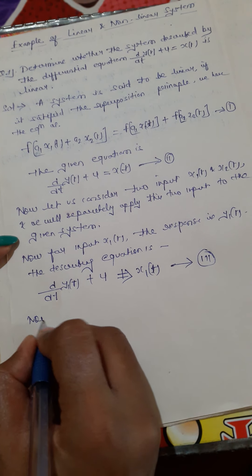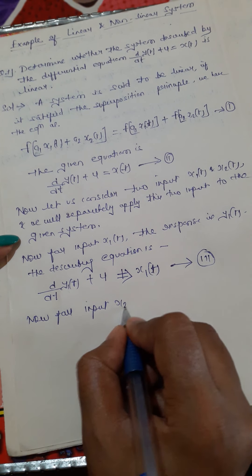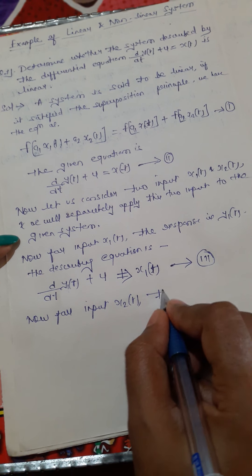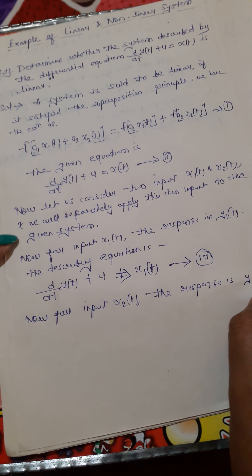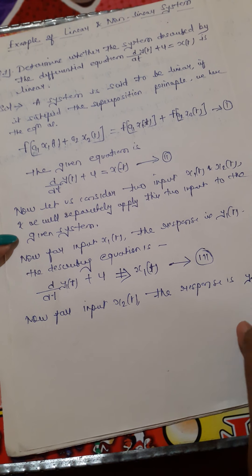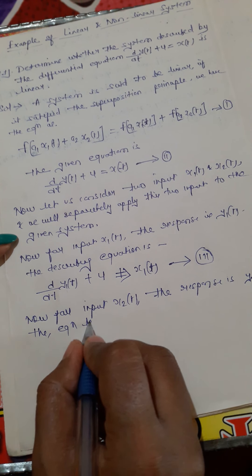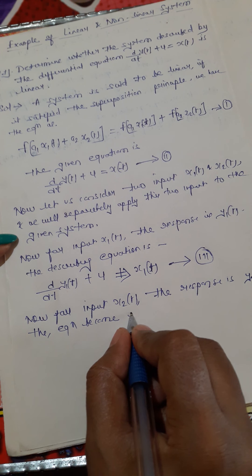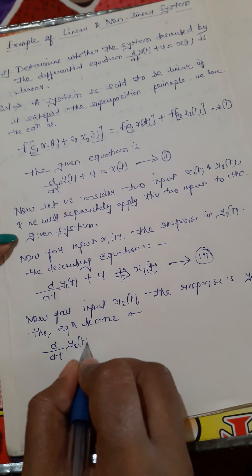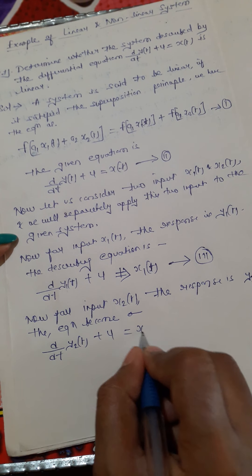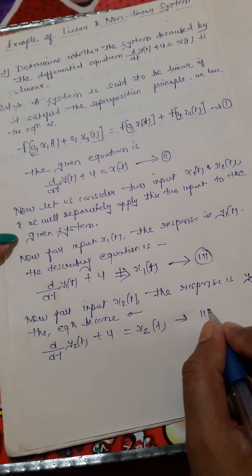Now for input x2(t), the response is y2(t). The equation becomes: d/dt of y2(t) plus 4 equals x2(t). This is equation number four.